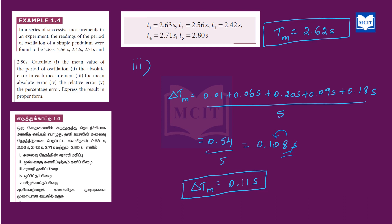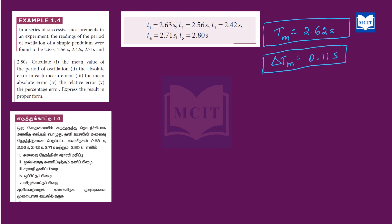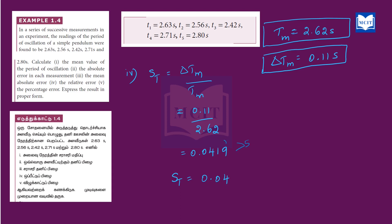The fourth subdivision is the relative error. Relative error equals delta tm divided by tm. So delta tm is 0.11 divided by 2.62, which gives 0.0419. Rounding, we get the relative error equal to 0.04.